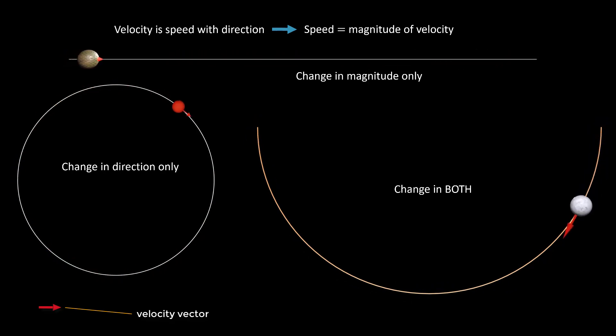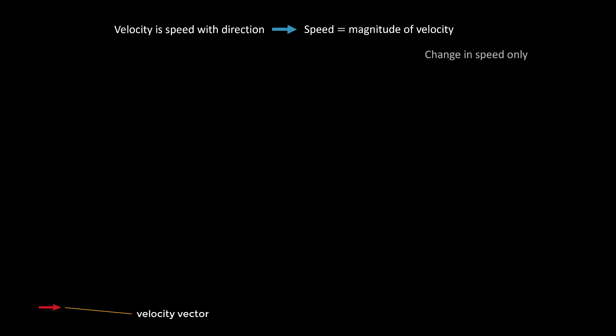Hence, a change in velocity per unit time can mean first an increase or decrease in speed per unit time without a change in direction.